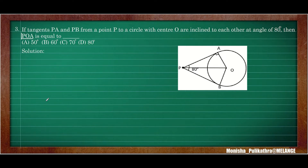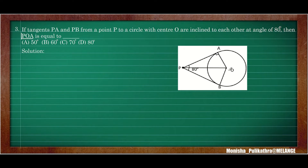Coming to the third question: If tangents PA and PB from a point P to a circle with center O are inclined to each other at an angle of 80 degrees, then angle POA equals what? Here angle APB is given as 80 degrees, and we need to find angle POA.